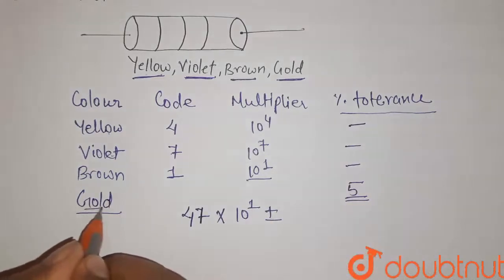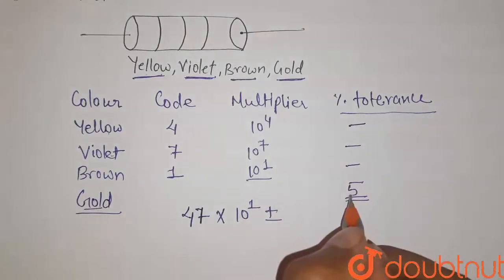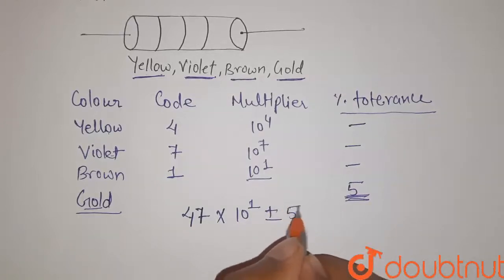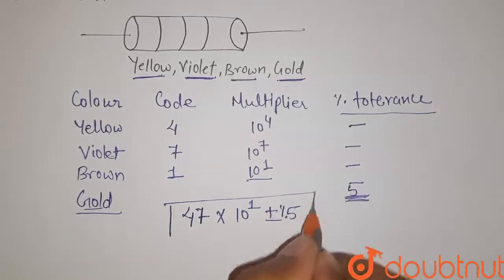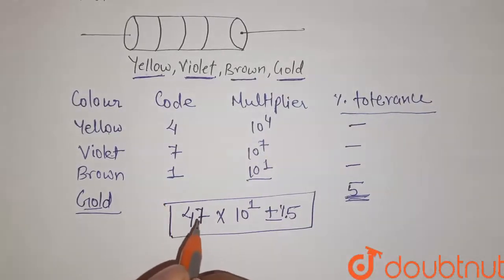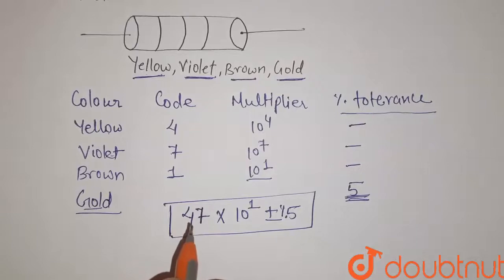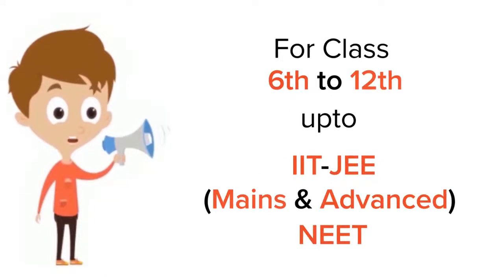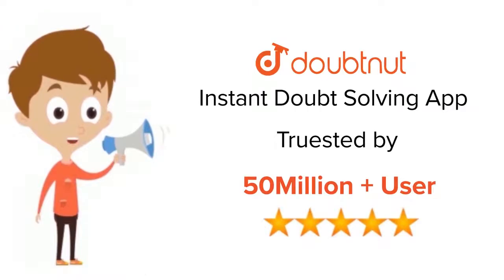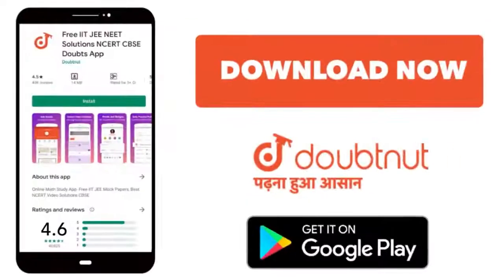The fourth color is gold and its value is 5, so the tolerance is ±5%. Therefore, the resistance of this carbon resistor is 47 × 10¹ Ω ± 5%. That's our solution for this question. Thank you. For class 6 to 12, IIT JEE and NEET level, trusted by more than 5 crore students — download Doubtnut today.